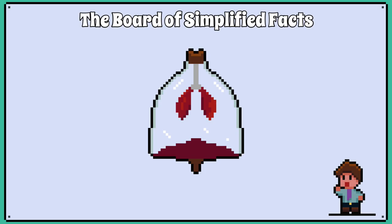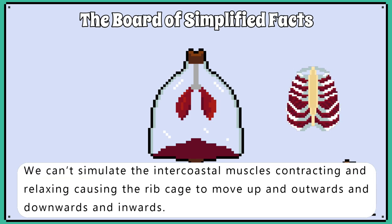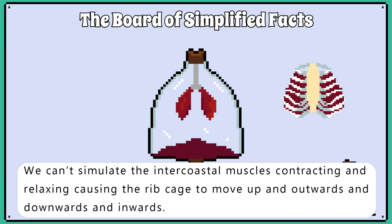The limitations of the model are as follows. The bell jar is rigid, unlike the rib cage. We can't simulate the intercostal muscles contracting and relaxing, causing the rib cage to move up and outwards and downwards and inwards.